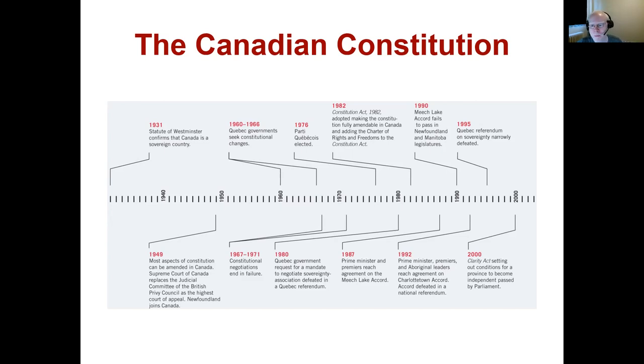Since 1995, there have been rumblings when a PQ government gets elected about another referendum. However, since 2000 in public opinion polling, support in Quebec for any form of referendum on sovereignty has been so low that even when the Parti Québécois gets elected, despite their support for independence, they haven't called a referendum knowing it would be defeated. Each time it gets defeated, it gets harder to call another one. There is still always a small minority in Quebec who are always supportive of some form of sovereignty, so if the federal government ever does something that angers enough Quebecers, it's possible the issue reemerges.